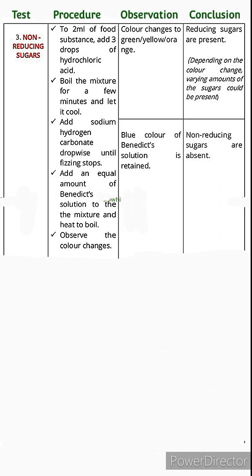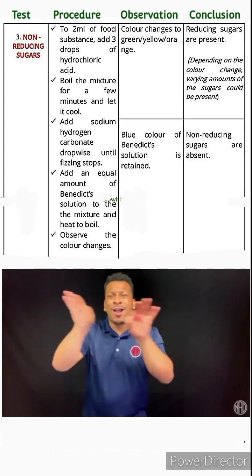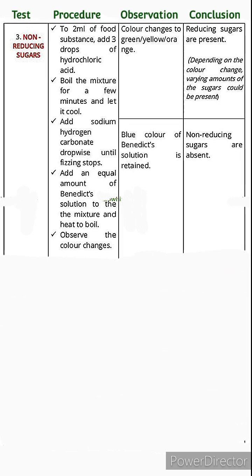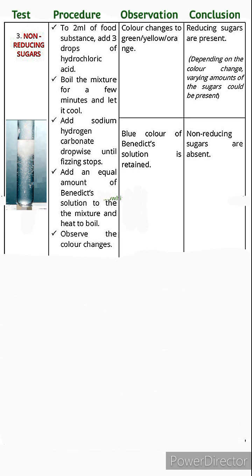Step 2: boil the mixture for a few minutes, then let it cool — it is very important to cool the mixture before proceeding. Step 3: add sodium hydrogen carbonate dropwise until fizzing stops. The fizzing is carbon dioxide gas produced when sodium hydrogen carbonate neutralises the hydrochloric acid. When fizzing stops, all the acid has been used up. The last two steps then follow the same procedure as the reducing sugars test.